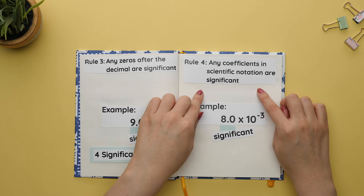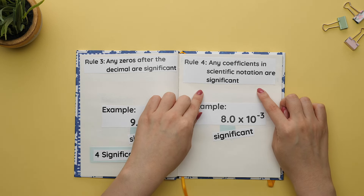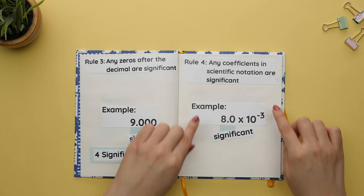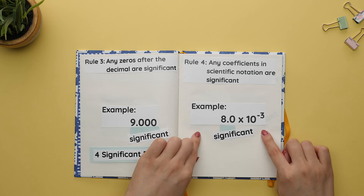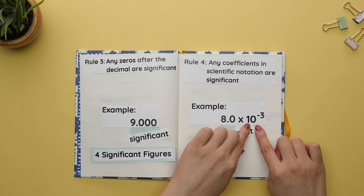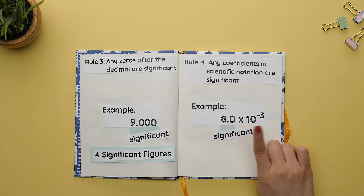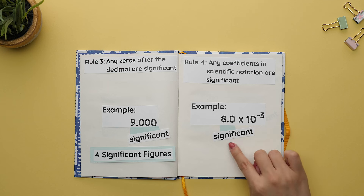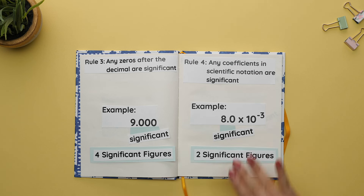Rule four: any coefficients in scientific notation are significant. Remember, a coefficient refers to the number in front. We do not look at the exponential portion of our scientific notation. So there are only two significant figures for this example.